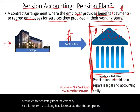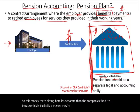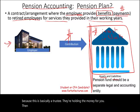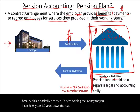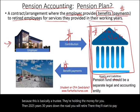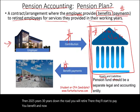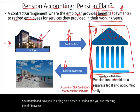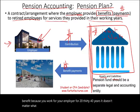It's because this is basically a trustee — they're holding the money for you. Then 20, 25, or 30 years down the road, you will retire. They'll start to pay you benefits. And now you're sitting on a beach in Florida receiving benefits because you worked for your employer for 20, 30, or 40 years. The point is, now you are receiving the benefit.